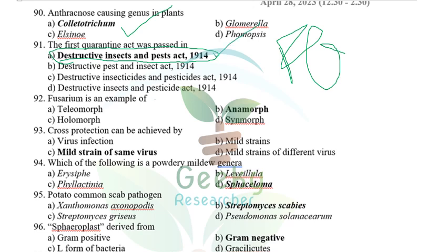Fusarium is an example of Deuteromycetes (Fungi Imperfecti) because it lacks a sexual stage. Cross protection is achieved by infection with mild strains of the same virus — also called pre-immunization. Plants are immunized by infecting with mild strains; for citrus it is citrus tristeza mild strains, for TMV it is TMV mild strains.